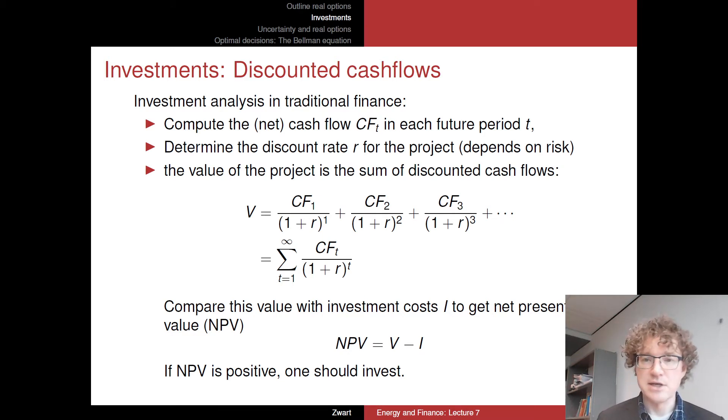So if this is indeed an infinitely lived project, then we might have an infinite number of cash flows each discounted more and more. So as long as R is a positive number, these cash flows which occur very far into the future get a very low weight, obviously, because they're discounted by a very high power of 1 over 1 plus R.